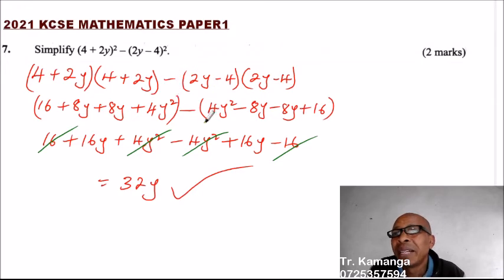So the step that is very important is this one. When you opening the bracket, this sign here, it will make the values inside the bracket to change, their signs to change. If it is positive, for example, here it is positive 4, you can see it changed. It has changed negative.